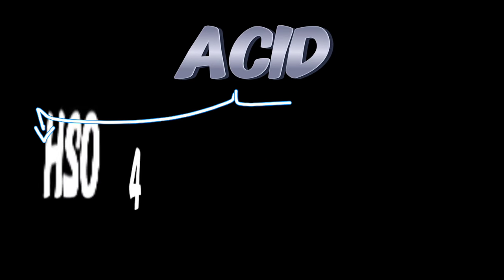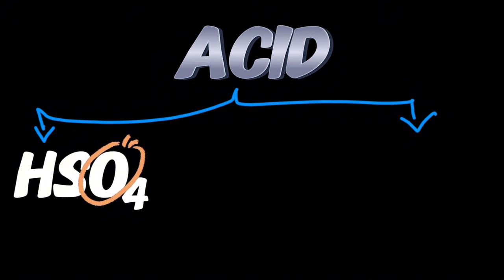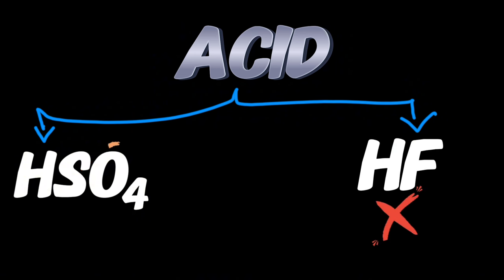When you have H at the beginning of the compound, it will be an acid. An acid can be named in two classifications: one when you have oxygen, and two when you do not have oxygen in the anion. We are going to start naming when you do not have oxygen in the anion.